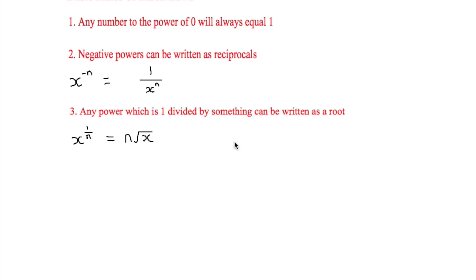And first of all any number to the power of 0 will always equal 1. So that could be 500 to the power of 0 or a million to the power of 0, this will always equal 1.